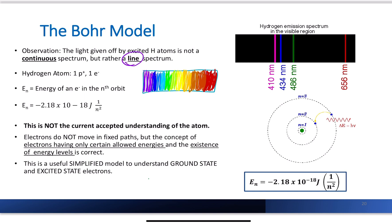A neutral hydrogen atom has one proton and one electron. The energy of the electron in the nth orbit, E-sub-n, refers to whichever energy level — n equals 1, 2, 3 — the electron is in. E-sub-n is equal to negative 2.18 times 10 to the negative 18 joules times 1 over n squared.